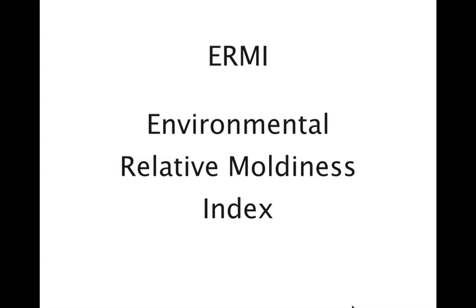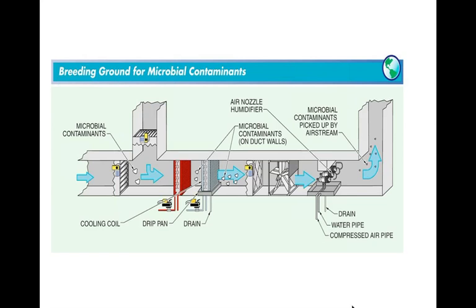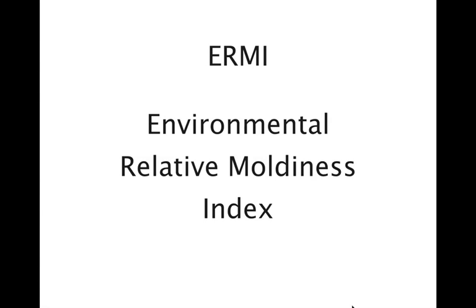The EPA has a test called the Environmental Relative Moldiness Index, or ERMI. It uses a device you attach to a vacuum cleaner — a homeowner can do it themselves. You vacuum a certain area of trafficked carpeting in your home, send the sample to a lab, and the lab compares it to thousands of other homes on a relative percentile scale. You could be in the 90th percentile of moldy homes or the 10th percentile. It's an interesting comparative tool, though still being evaluated.